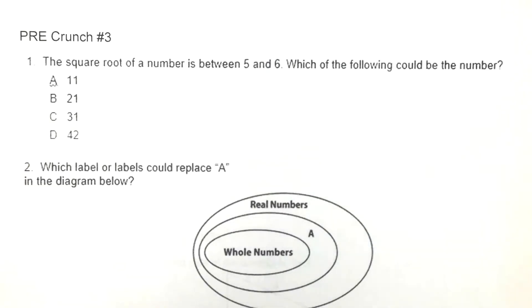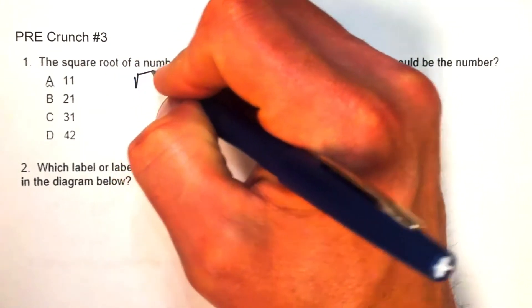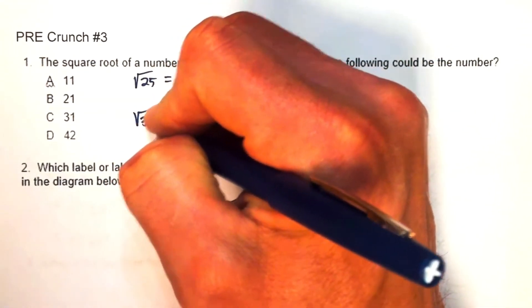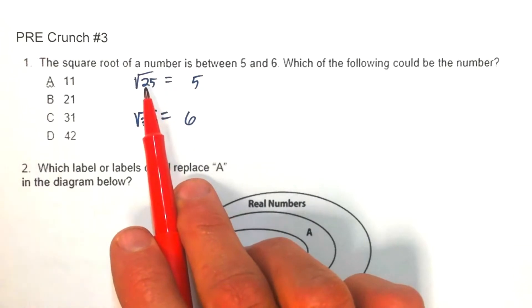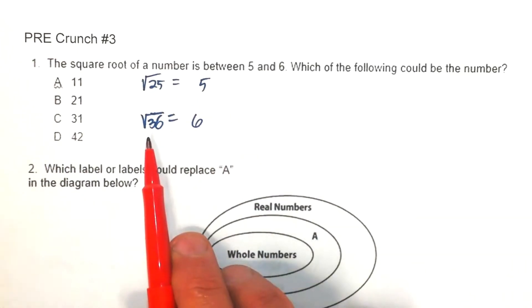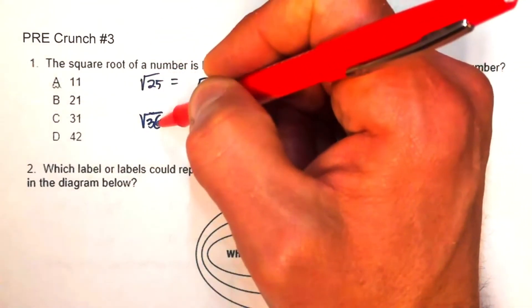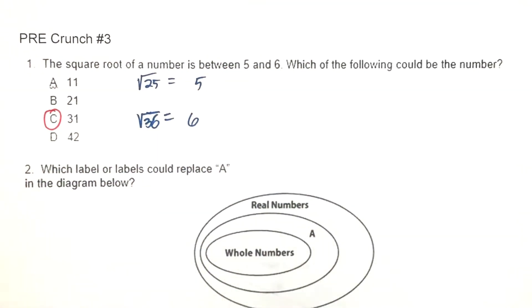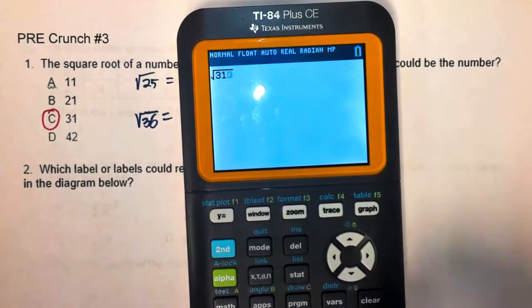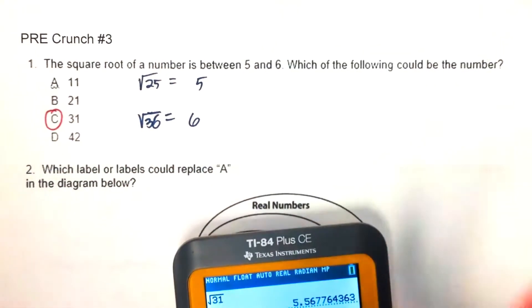Problem one: the square root of a number is between five and six. We know that the square root of 25 is five and the square root of 36 is six. The square root asks what times itself gives that number. So the answer must be between 25 and 36 — that's 31. Double-checking: the square root of 31 is approximately 5.5677, which is between five and six.